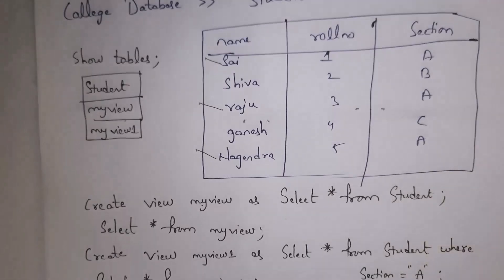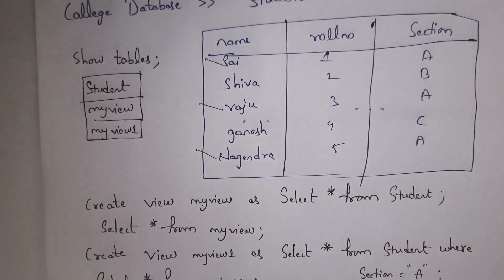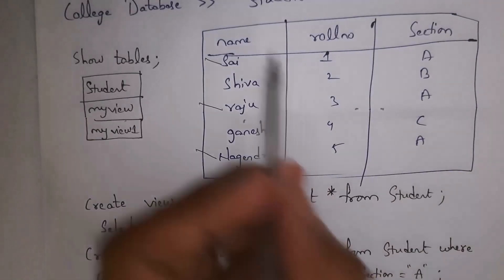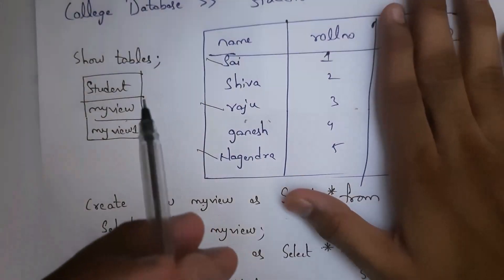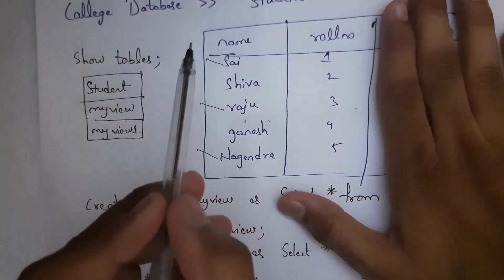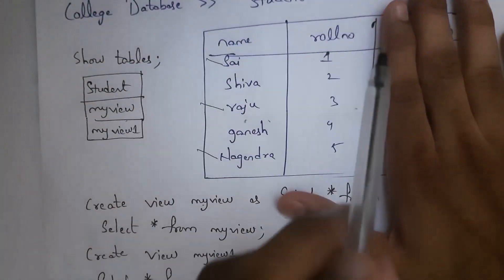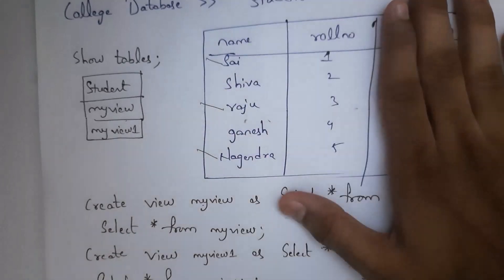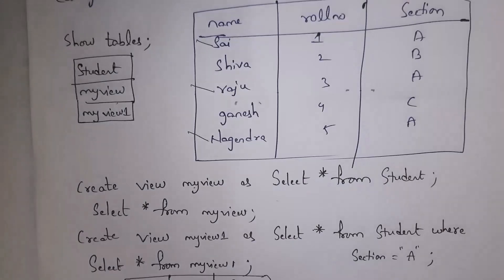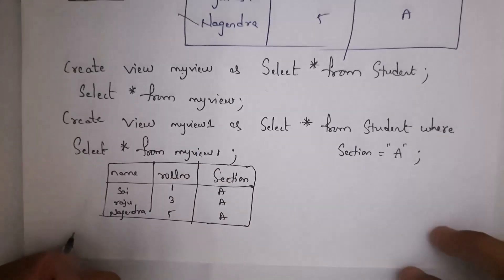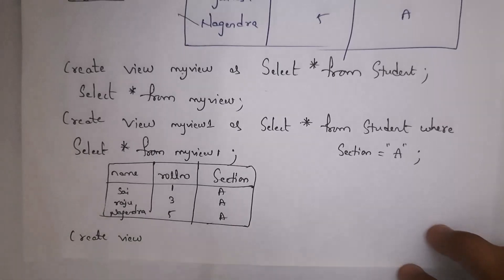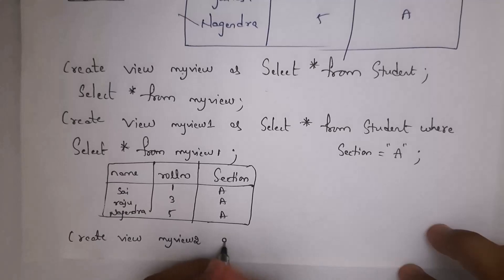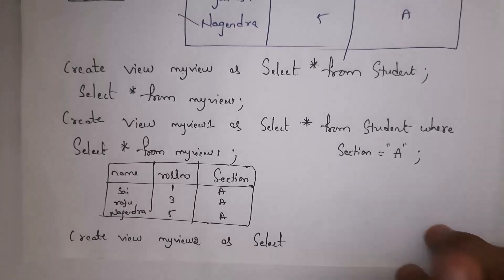This time I don't want all three columns. I just want only the name column and roll number column as output — I need to skip the section column. I will create a view by selecting only those two columns. Write: CREATE VIEW and give view name 'my_view_2'. CREATE VIEW my_view_2 AS SELECT.